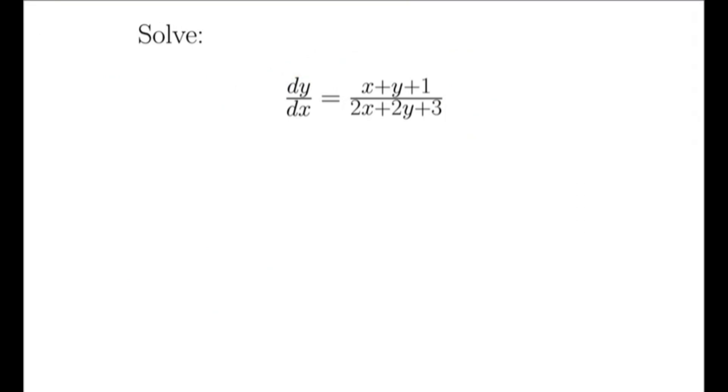Now try to simplify this equation. We have x plus y plus 1, and the denominator we can write as 2 times x plus y plus 3.